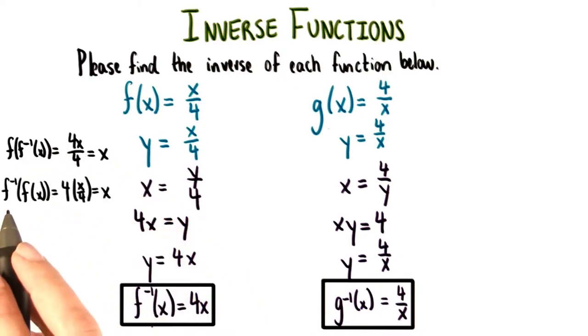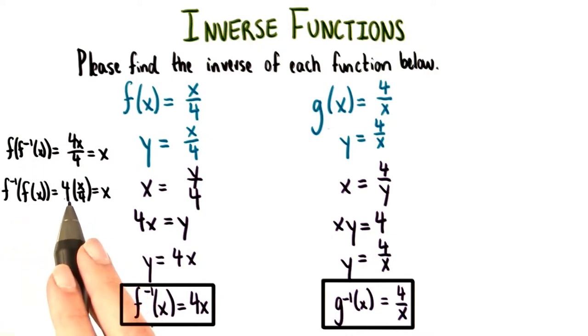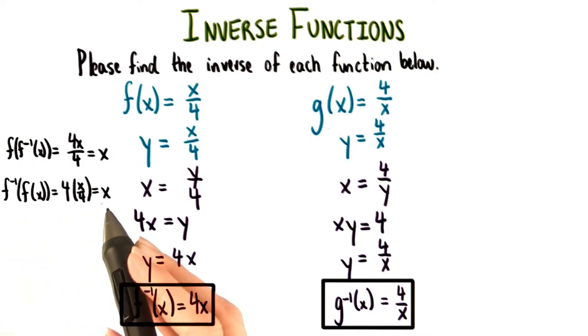Going the other direction, f inverse of f of x gives us 4 times x over 4, which is just x. Awesome. This must really be our inverse.